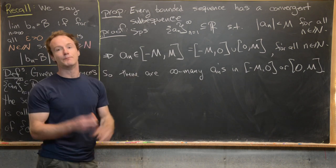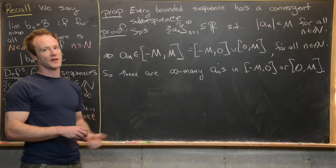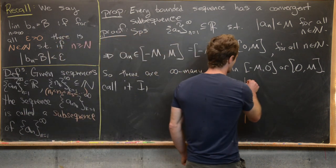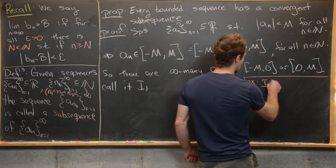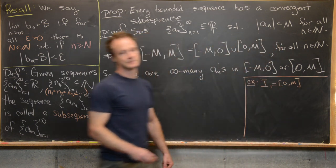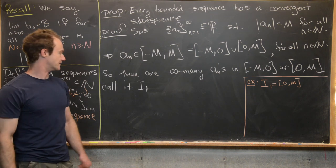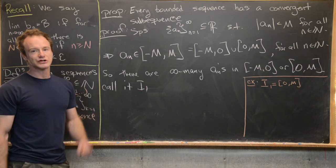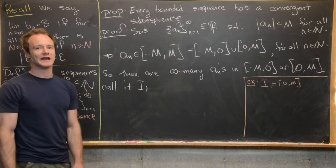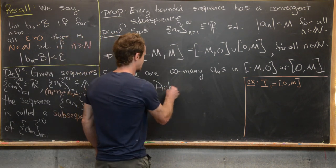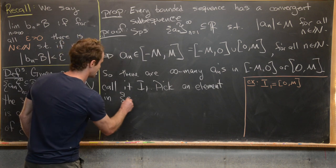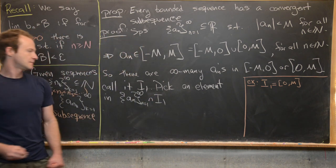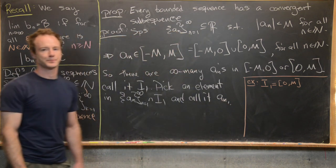Whichever one of those intervals contains infinitely many terms — and both might — we just pick one and call it I_1. Say I_1 = [0, M] in our example. So I_1 has infinitely many a_n's. Now pick one of the a_n's in I_1 and call it a_{n_1} — pick an element from the sequence intersect I_1.